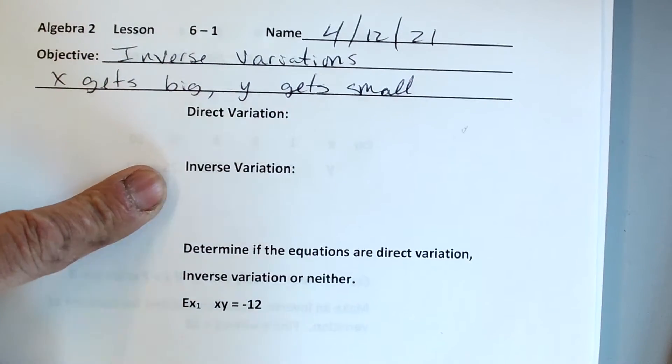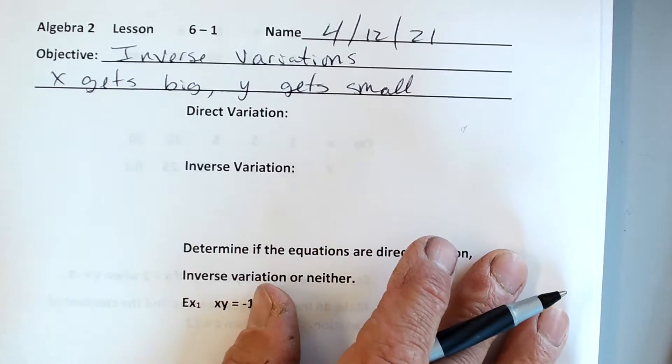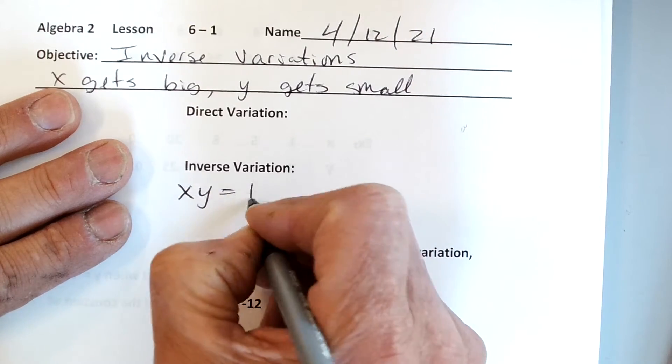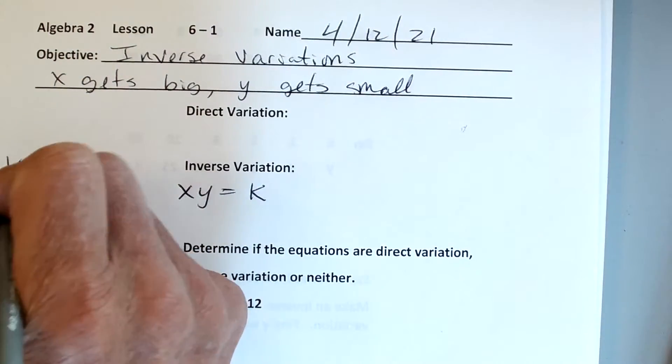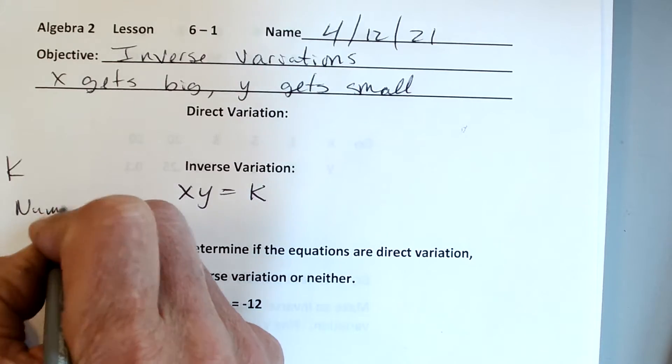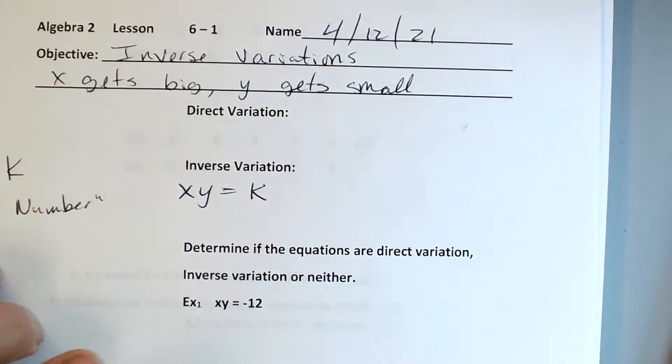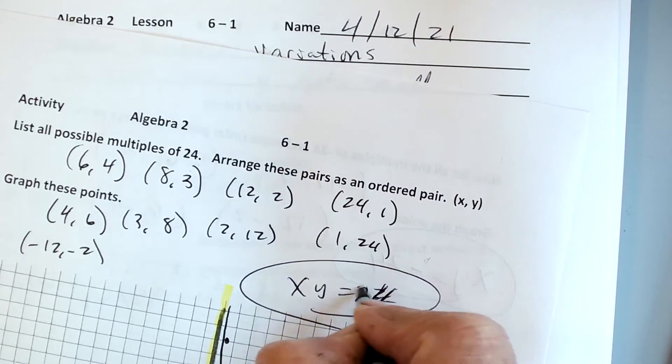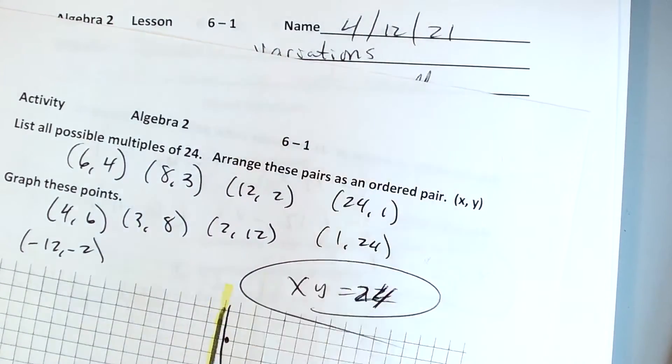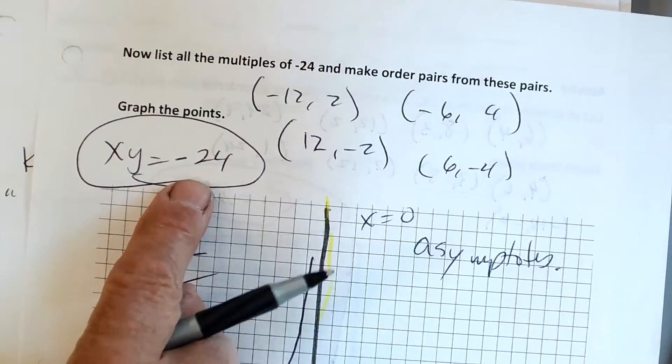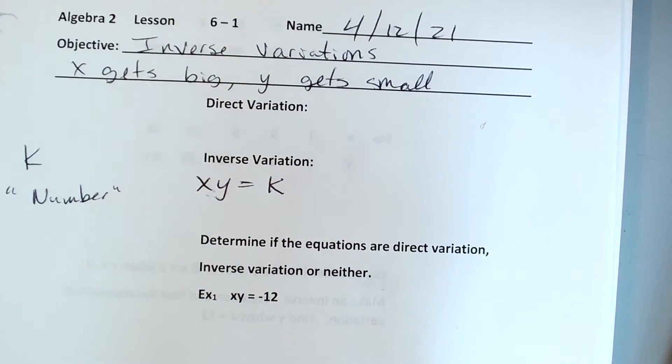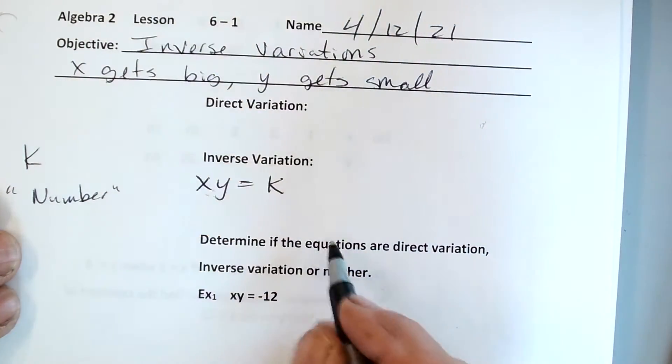An inverse variation comes in these equations: x times y equals some number. We're going to say that number is k. k is just a number, like 12 or 24. We did it in our warm-up that k was 24. x times y equals 24, and x times y equals negative 24. That's called the variation constant.